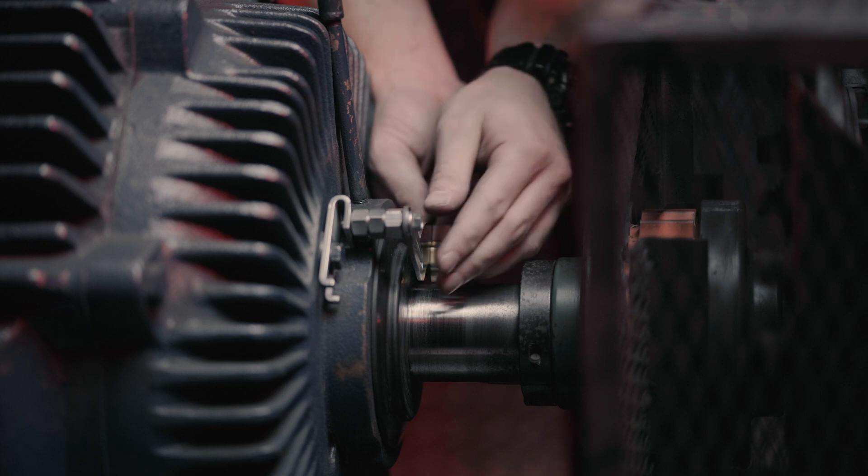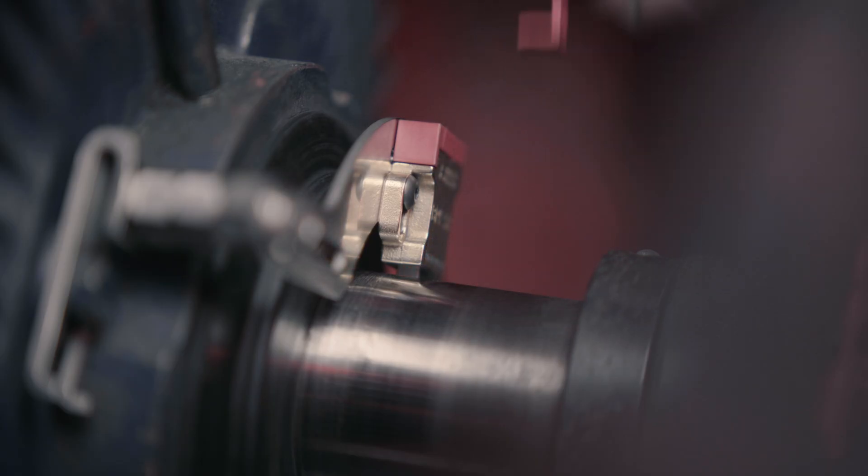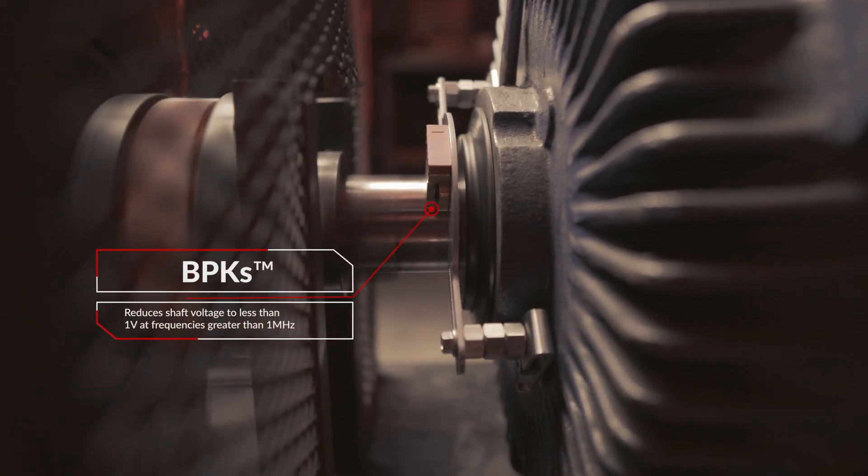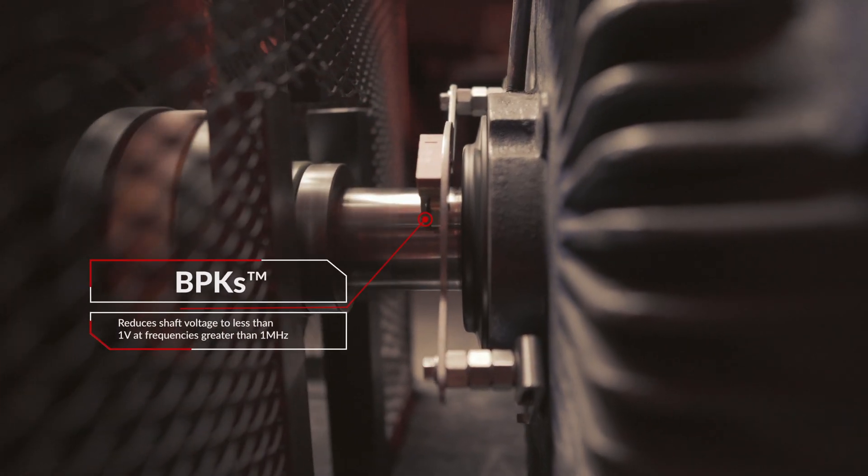Helwig Bearing Protection Kits use a proprietary silver graphite material that offers an industry leading lowest resistance path to ground. In fact, it's five times lower in resistance than carbon fiber.